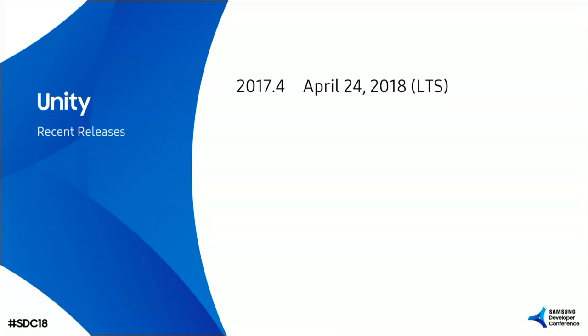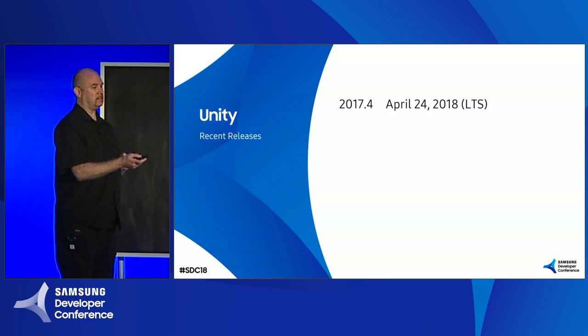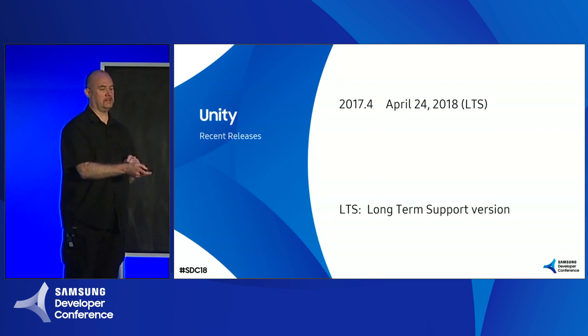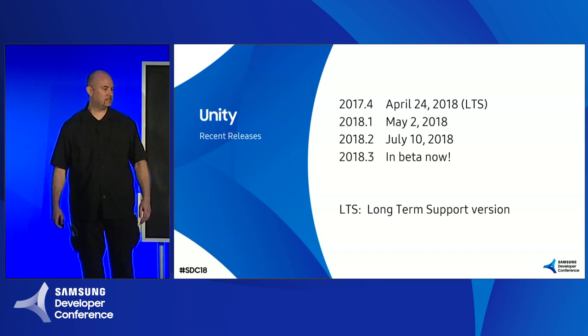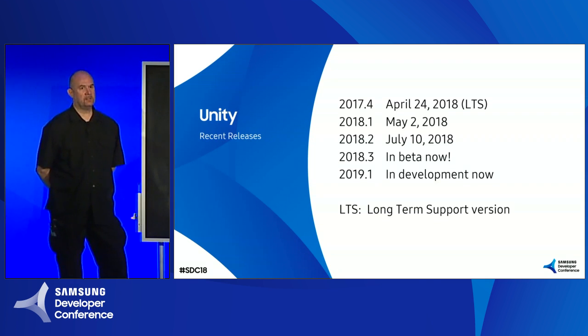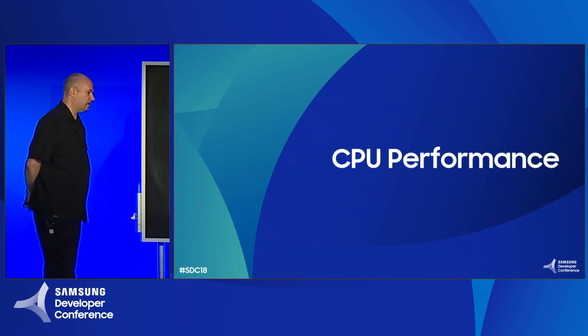A quick note about releases: version 2017.4 is an LTS — long-term support — version. We promise to keep supporting it with bug fixes for a long time, making it the most stable version of Unity, though without new features. There are newer versions with flashier features. The current version in public beta is 2018.3, and we're currently working on 2019 versions. All right, into performance — CPU performance.